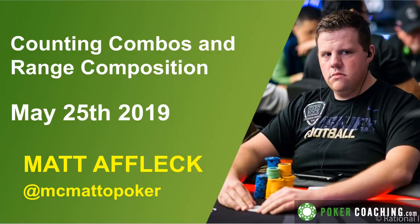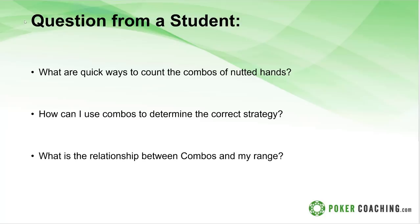We'll have a lot of time for questions at the end. Hopefully everyone's excited for the World Series coming up — it's cold in Las Vegas, we just set a record for 65 degrees in May, not the normal 100. The main questions I always get are: what are quick ways to count combinations of nutted hands when the flop comes out, how can I use combos to determine the correct strategy, and what is the relationship between combos and my range?